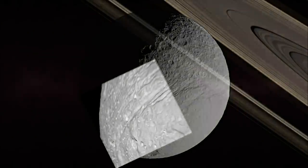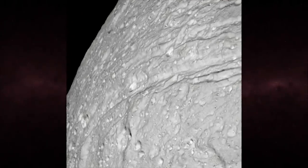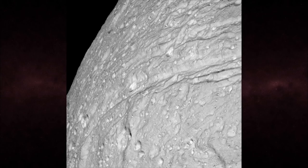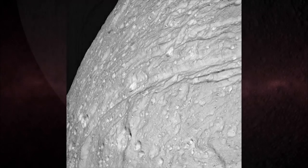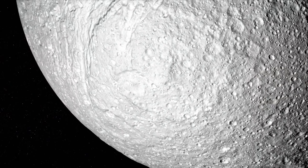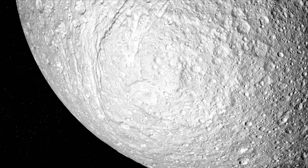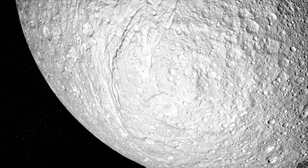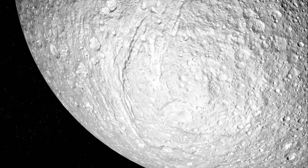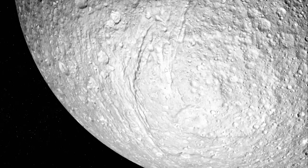For example, this giant canyon called Ithaca Chasma wraps around Tethys like a waistband. It may have formed long ago, when the icy interior of Tethys froze and expanded, forcing its crust to stretch apart at the seams.